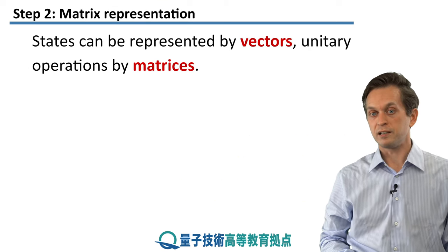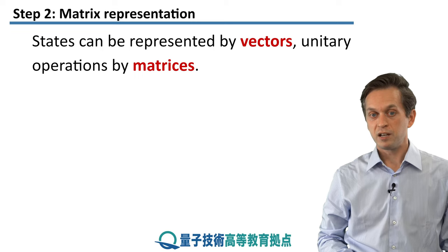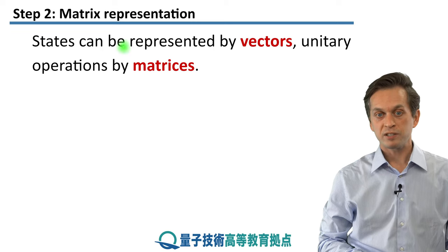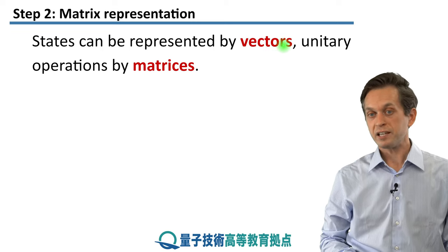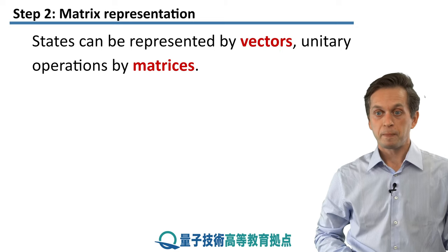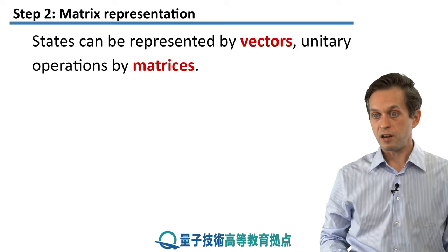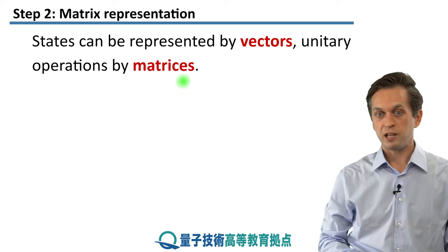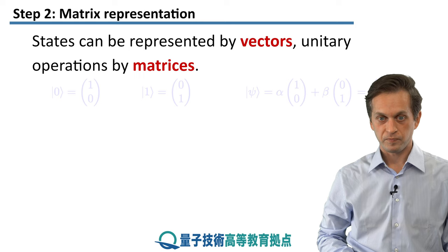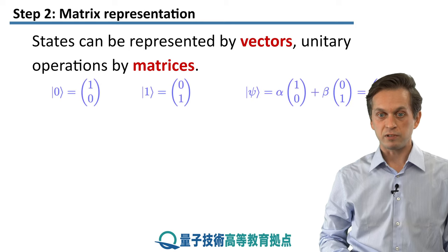How can we represent this in matrix representation? So far we have been talking about states as these kets. But in fact, they can be represented as vectors. And we know that in order to transform vectors, we have to multiply them by matrices. Therefore, unitary operations can be represented by matrices. So let's look at some examples.